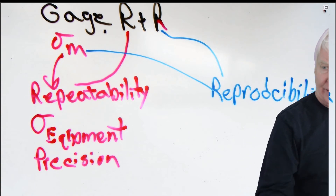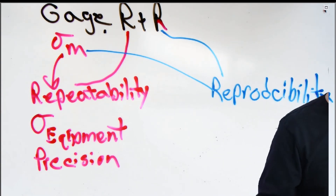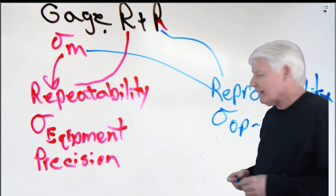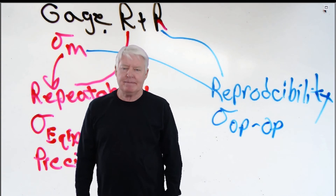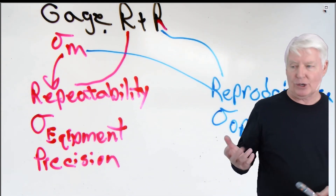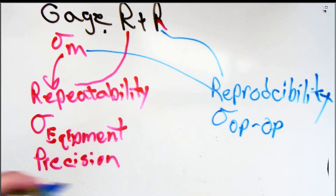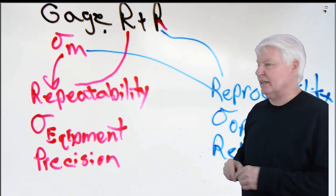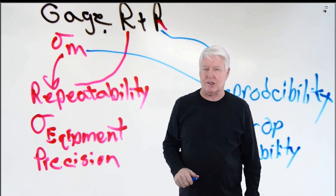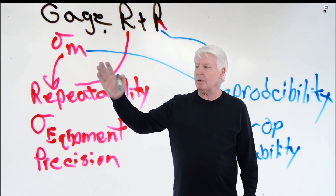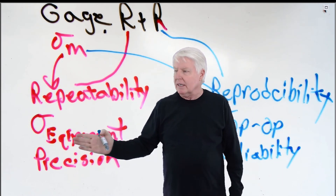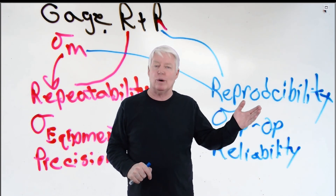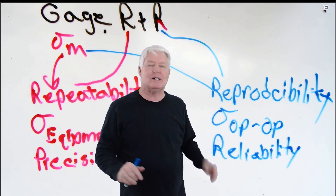Reproducibility is sigma from operator to operator — it's the variation that comes when you change operators. It also has three names, and that includes reliability. If you're taking an ASQ exam, they'll test you on all of these. Reproducibility is sigma of operator to operator. My memory hook: reproducibility has one O — that stands for operator. That's how I keep repeatability and reproducibility clear in my mind.